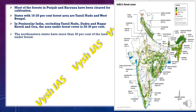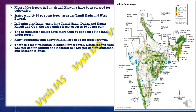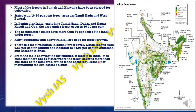In Peninsular India, the forest cover is 20 to 30%. The northeastern states have more than 30% of land under forest because of the relief and precipitation — the hilly topography and the heavy rainfall. There is a lot of variation in actual forest cover, from 9.56% in Jammu and Kashmir to 84.01% in Andaman and Nicobar Islands. It is said that 15% of states in India have more than one-third of their total area under forest cover, which is enough for maintaining ecological balance and sustaining a healthy ecosystem.